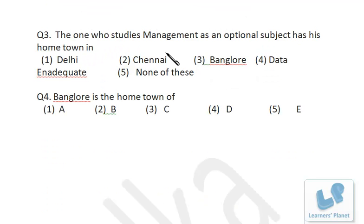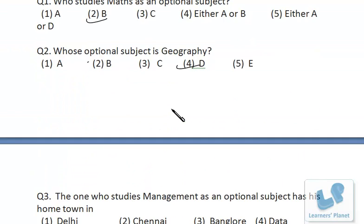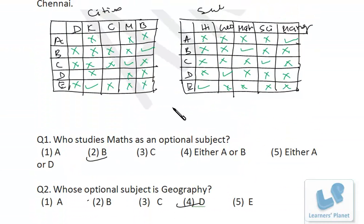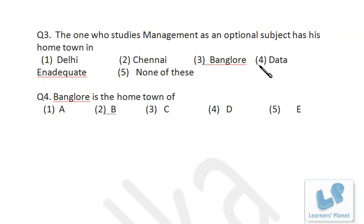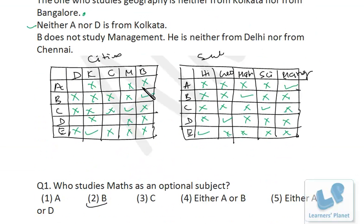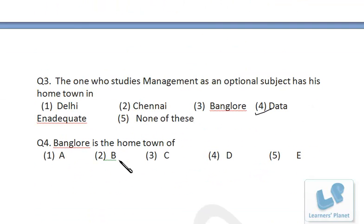The one who studies Management has their hometown either in Delhi or Chennai — that's A — but we are not clear about A's exact hometown, so the answer is data inadequate. Bangalore is the hometown of B.